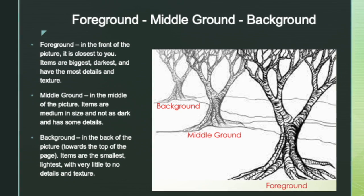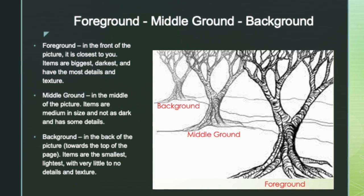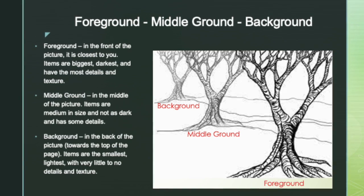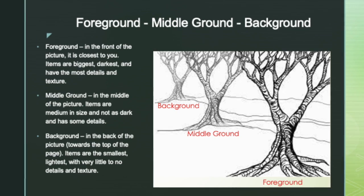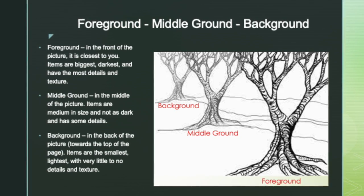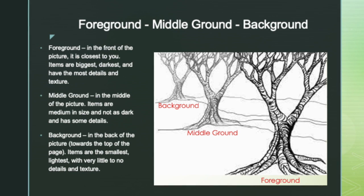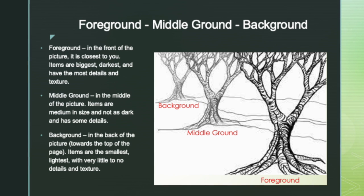In the foreground, your images are larger, darker, and have more details and textures. The images in the background are smaller, lighter, and have very little, if any, details and texture. And in the middle, it's all in the middle.